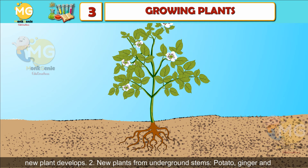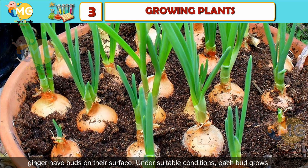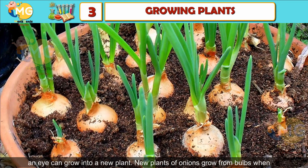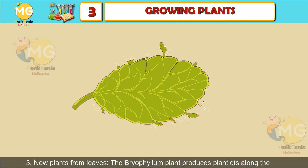New plants from underground stems: potato, ginger, and onion are underground stems where food is stored. Potato and ginger have buds on their surface; under suitable conditions, each bud grows into a new plant. The buds of potato are called eyes — any piece of a potato with an eye can grow into a new plant.